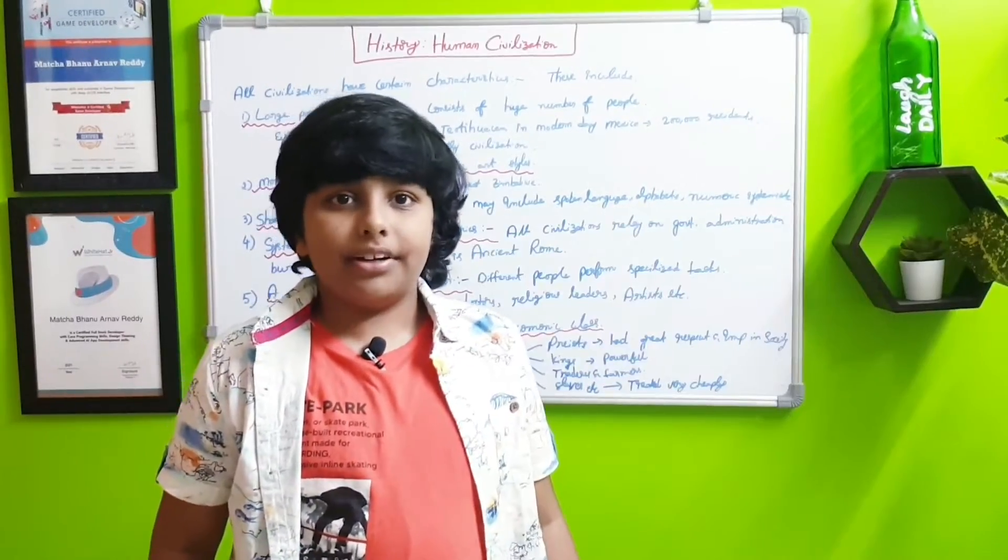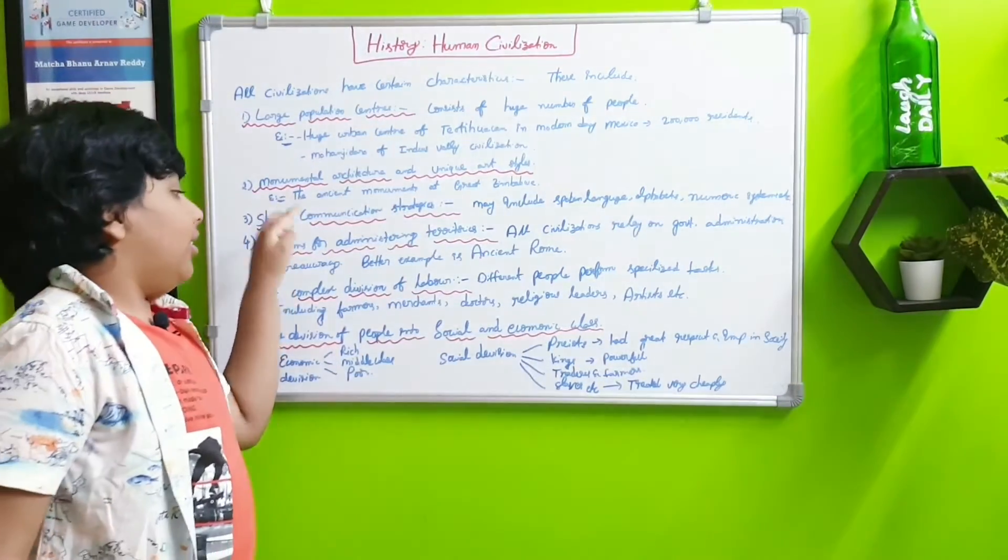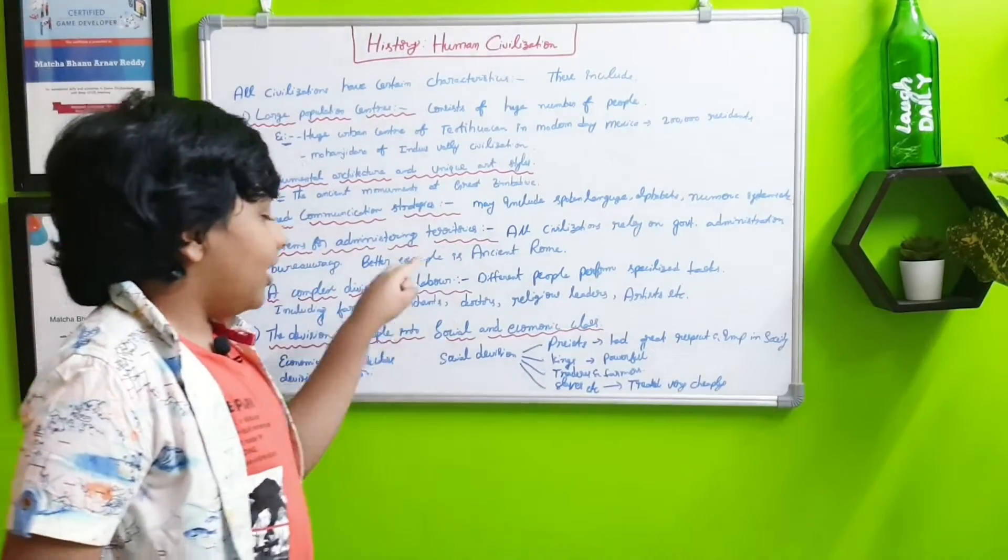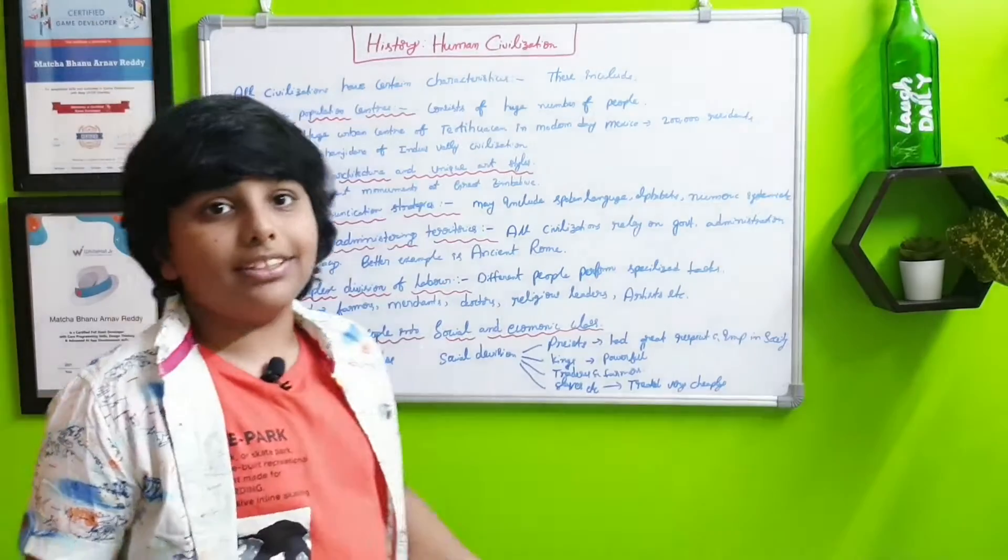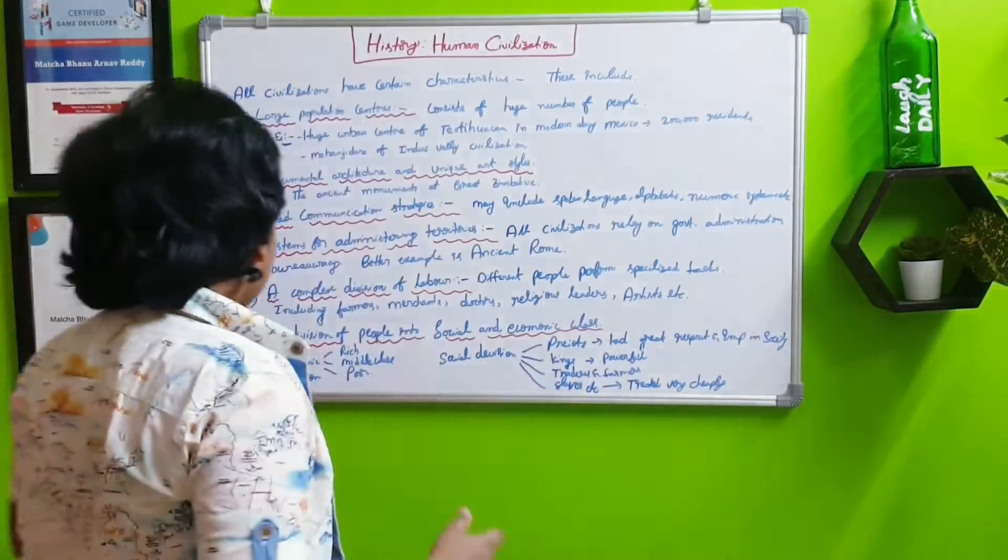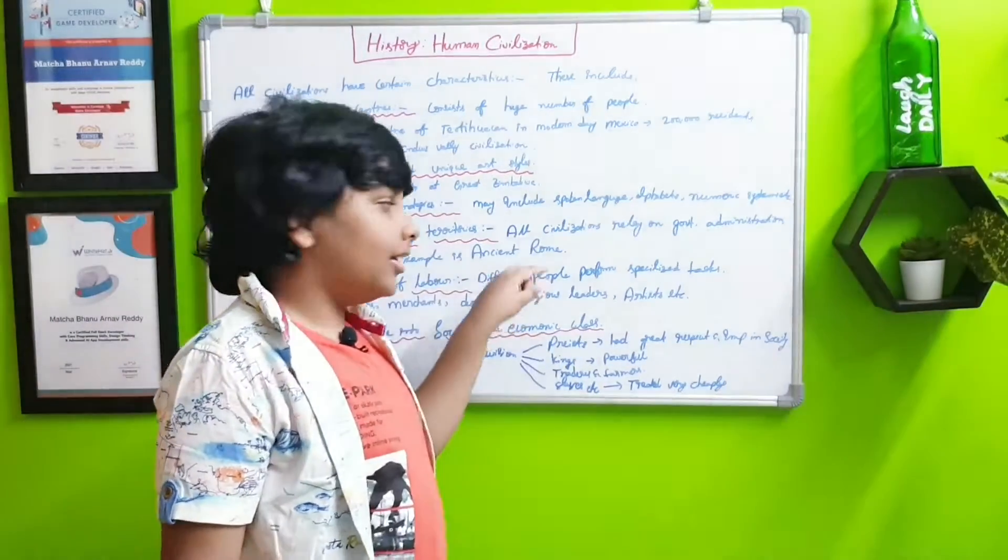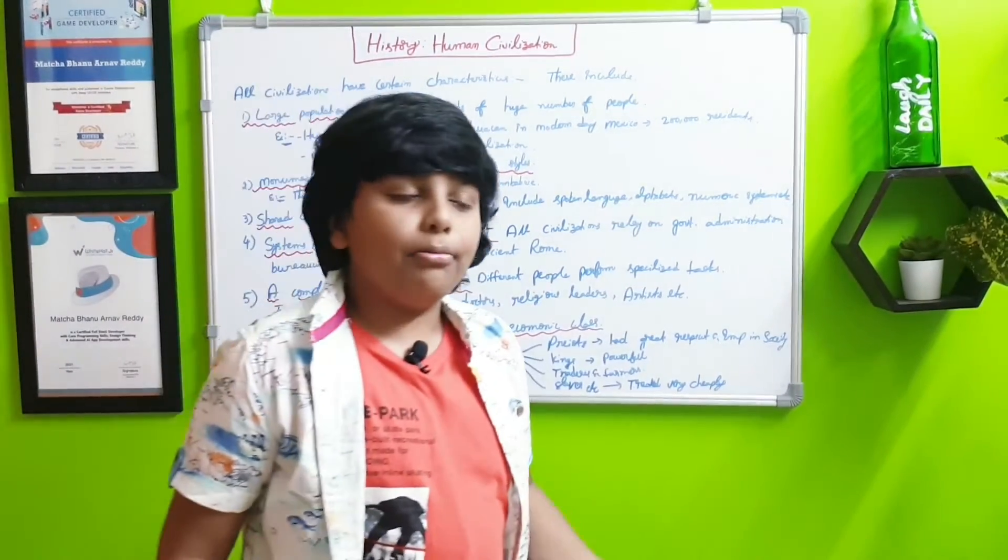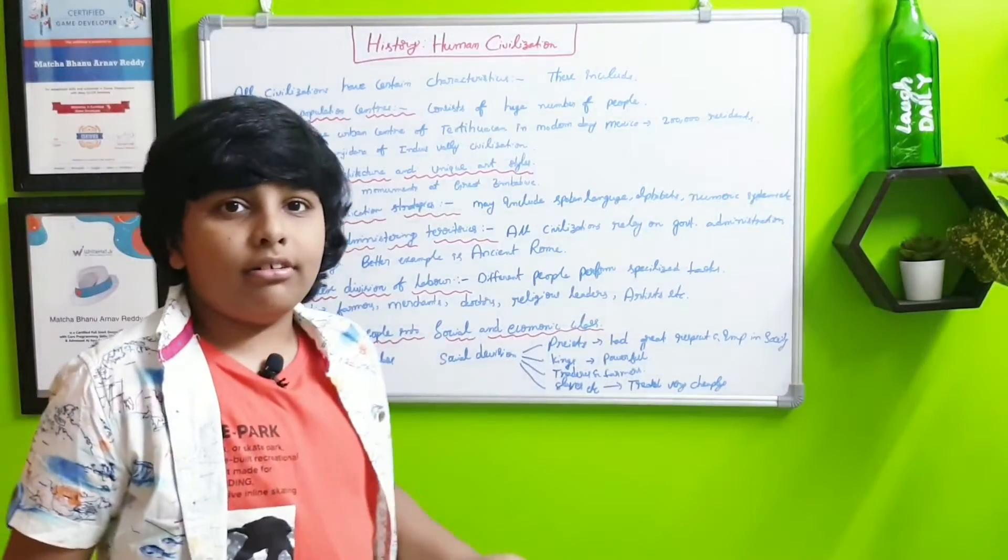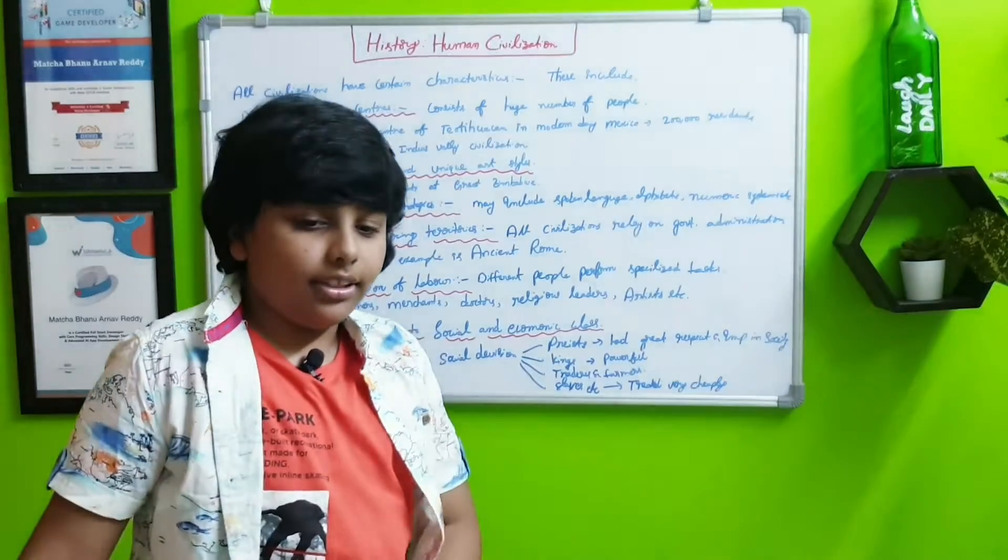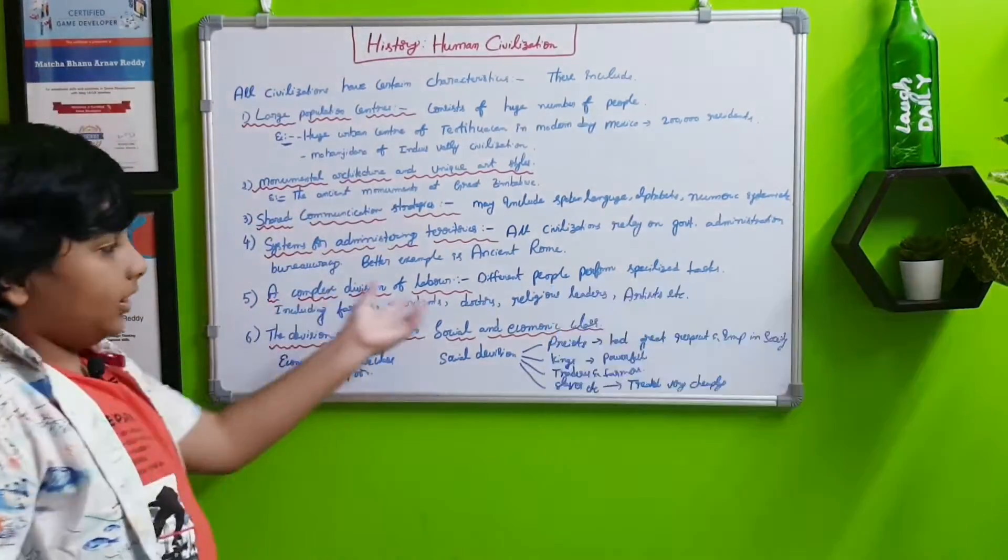Next, the fifth one: a complex division of labor. Different people perform the specialized tasks. That means they had different jobs including farmers, merchants, doctors, leaders, and artists, etc. That means when before these jobs were made there were only farmers for food only. There were no other things like paintings, etc. So that's why there are this many things.